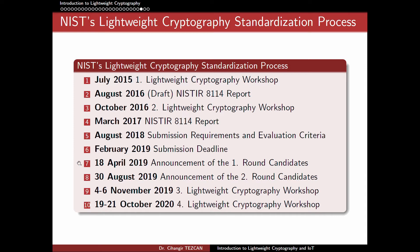The submission requirements and evaluation criteria were published in August 2018, and the deadline for candidates was February 2019. This competition-like standardization process received 57 algorithms, and 56 of them were announced as first-round candidates on April 18, 2019. The crypto community then tried to cryptanalyze these algorithms and measured their performance on both software and hardware.